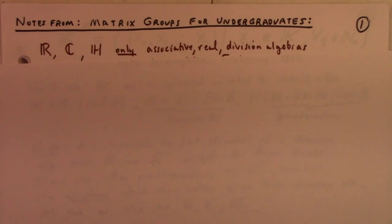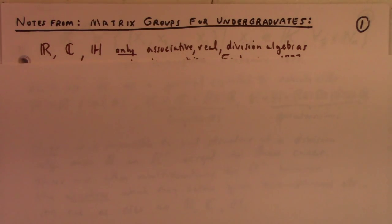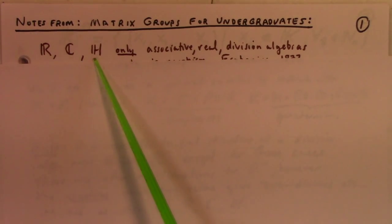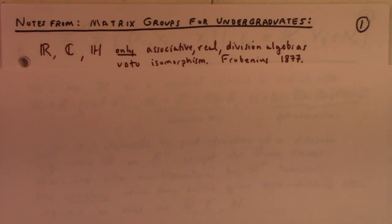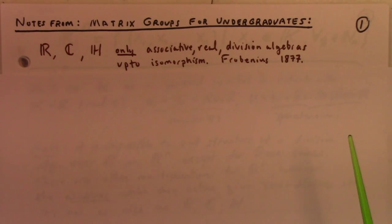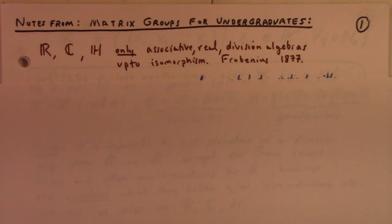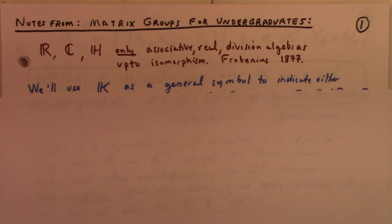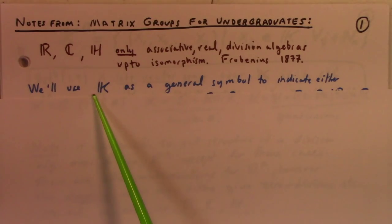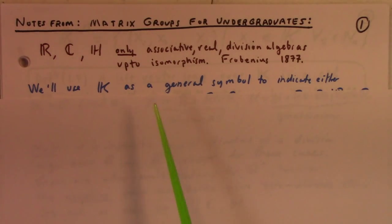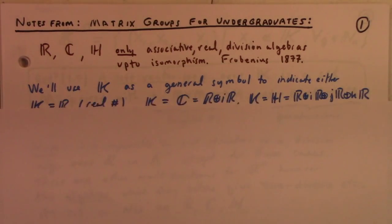We're going to study, in particular, associative real division algebras — so the reals, the complexes, and the quaternions. These are the only associative real division algebras up to isomorphism. This is a result of Frobenius. We use the symbol K as a general symbol to indicate any of these three cases.